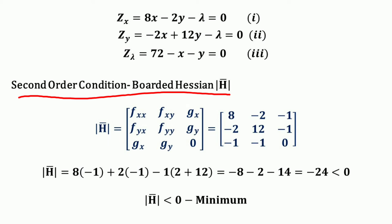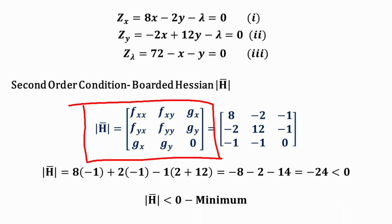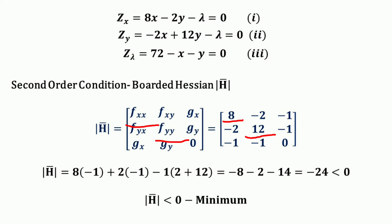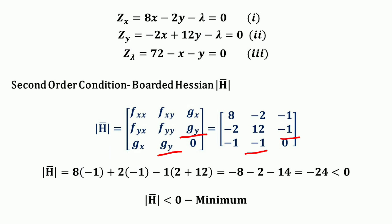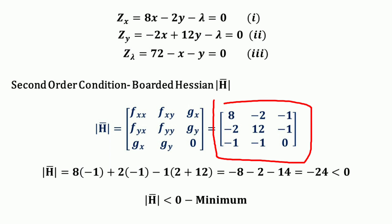The Bordered Hessian is composed of the second-order partial derivatives. The second-order direct partial derivatives on the principal diagonal are f_xx = 8 and f_yy = 12. The second-order cross partial derivatives off the principal diagonal are f_xy = −2 and f_yx = −2. The matrix is bordered by the first derivatives of the constraint: g_x = −1 and g_y = −1, with 0 on the principal diagonal. So the Bordered Hessian becomes: | 8  −2  −1 | | −2  12  −1 | | −1  −1   0 |. We now find the determinant value.